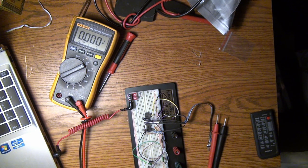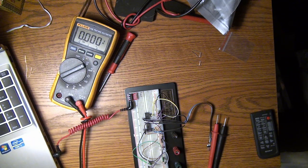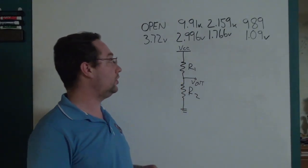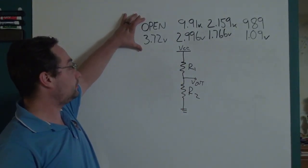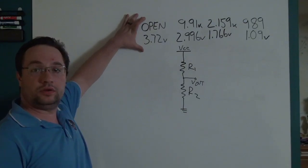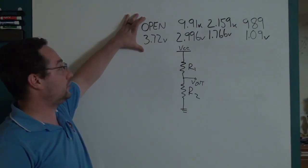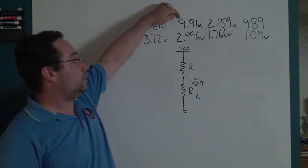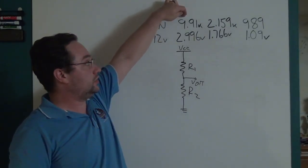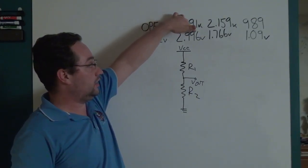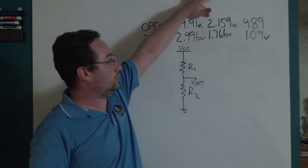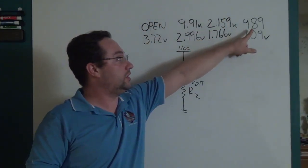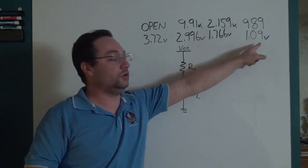Now that we've got the voltage measurement versus the resistance measurement, I can go ahead and throw this up onto the dry erase board with the numbers. I have the results summarized here on the whiteboard. When the port was effectively open, we got a voltage of 3.72. When the resistance was 9.91k, the voltage was 2.996. When the resistance was 2.159k, the voltage was 1.766. And when it was 989 ohms, it was 1.09.